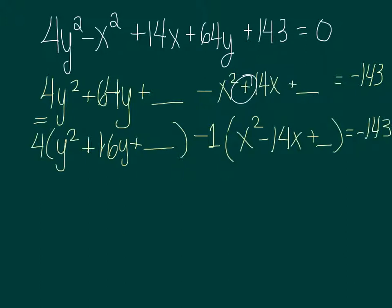And now I go and fill in my blanks, just like I've always done. So in here, divide 16 by 2, we get 8, 8 squared is 64. Divide 14 by 2, we get negative 7, and negative 7 squared is going to be plus 49.